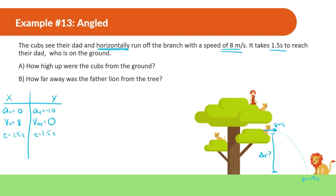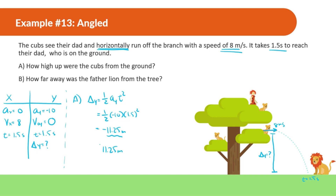Using the formula: displacement in y equals one-half times ay times t squared. So it's one-half times negative 10 times 1.5 squared, which gives negative 11.25 meters. However, since it asks how high from the ground, that's just the positive value: 11.25 meters.